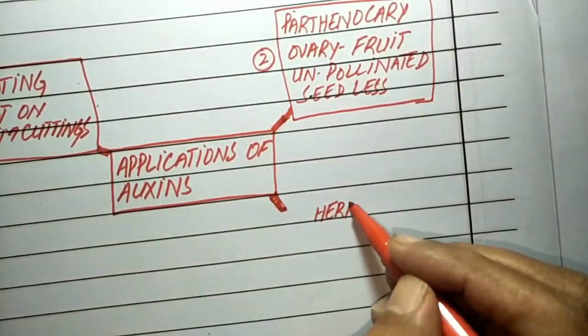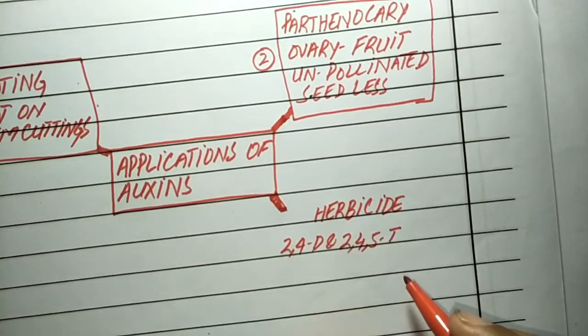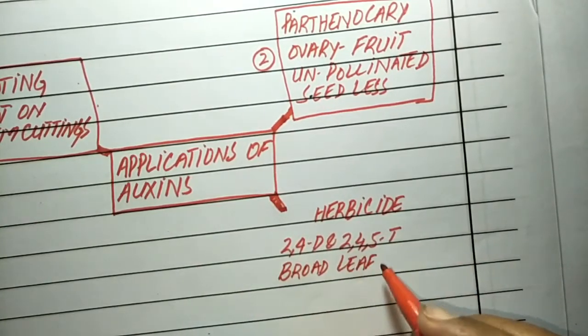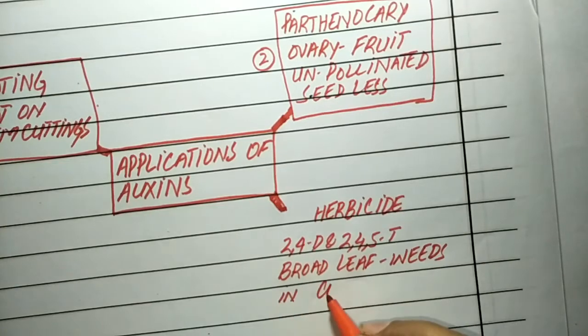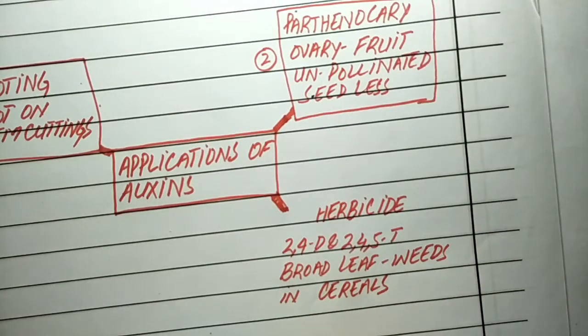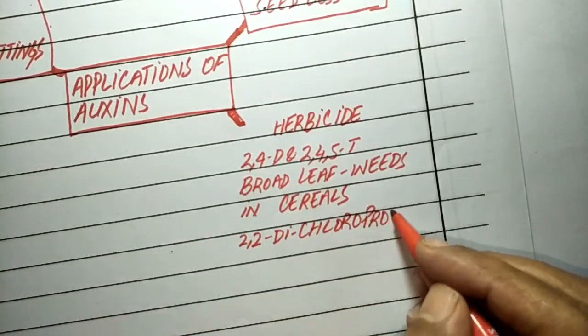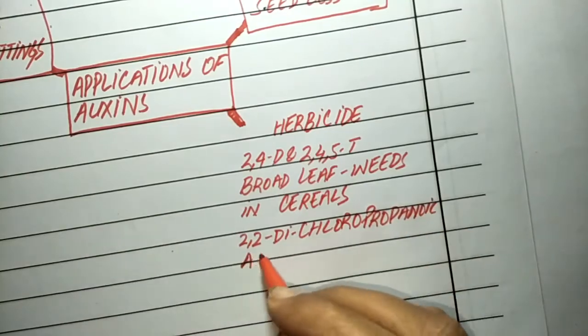They are also used as weedicides or herbicides. For example, 2,4-dichlorophenoxyacetic acid and 2,4,5-trichlorophenoxyacetic acid remove broad-leaved weeds in cereal crops and lawns because they do not affect mature monocots, while 2,2-dichloropropanoic acid kills grasses in broad-leaved crops.